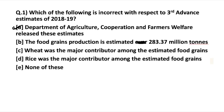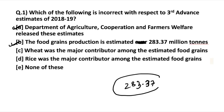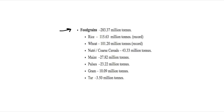The Department of Agriculture combined and released this data for the third advanced estimates. Food grains production is estimated at 283.37 million tons — you need to remember this number. This is the estimated food grains production for 2018-19 according to the third advanced estimates. Rice has a record production of 115.63 million tons and wheat has a record production of 101.2 million tons.